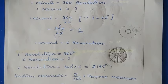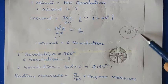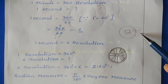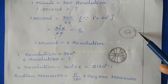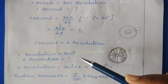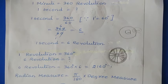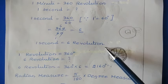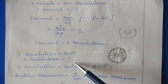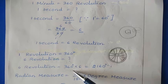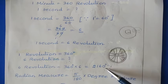A wheel is in the form of a circle. In a circle, one complete rotation or revolution creates a 360-degree angle. So one rotation is one revolution. In 1 second, the wheel makes 6 revolutions, so the total angle is 360 degrees × 6, which gives us 2160 degrees.